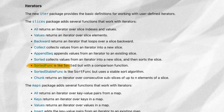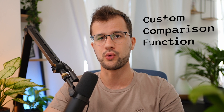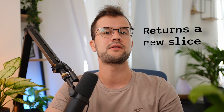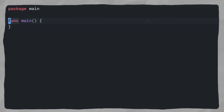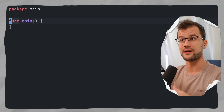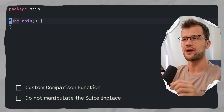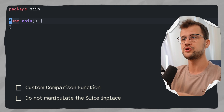There is now a sortedFunc and sortedFuncStable function in the slices package. These two new functions that come with Go 1.23 basically allow you to first create a custom comparison function while sorting, and second, they return a new slice — meaning they do not manipulate the original slice in place. This is a highly requested feature in the Golang community. The use case is to apply a custom comparison function and not manipulate the original array in place.